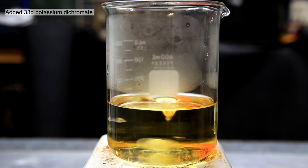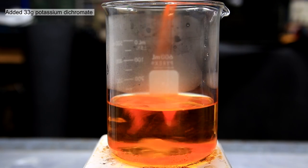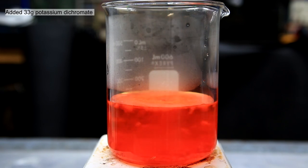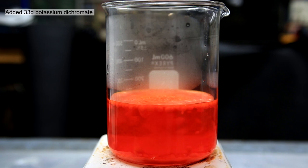Once this was done, 33 grams of potassium dichromate was added. The addition of the dichromate is in no way exothermic so you don't need to add it slowly and it can simply be dumped in all at once.